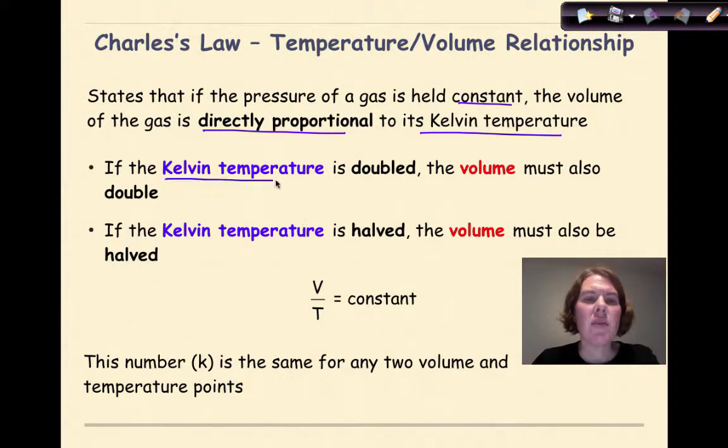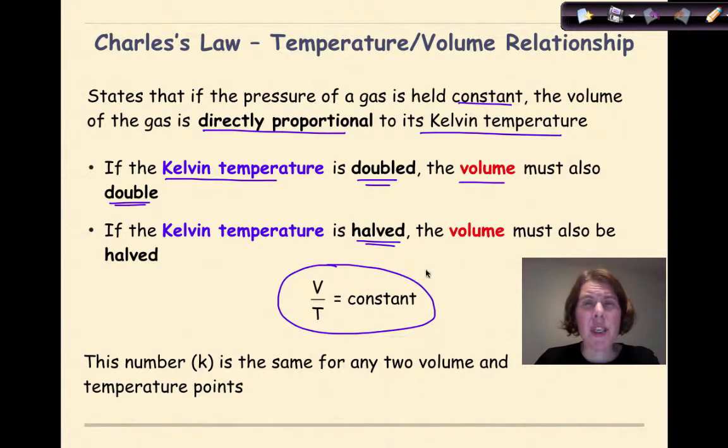So if the Kelvin temperature is doubled, the volume must also double. And at the same time, if the Kelvin temperature is halved, the volume must be halved. So we have this volume and temperature constant right here, where we're going to see a direct relationship. So this number K, which represents our constant, is the same for any two volume and temperature points.